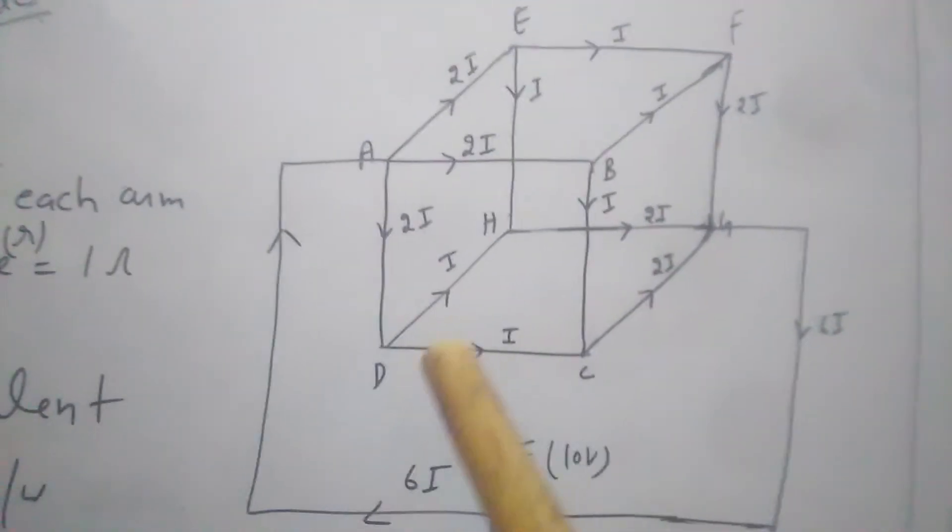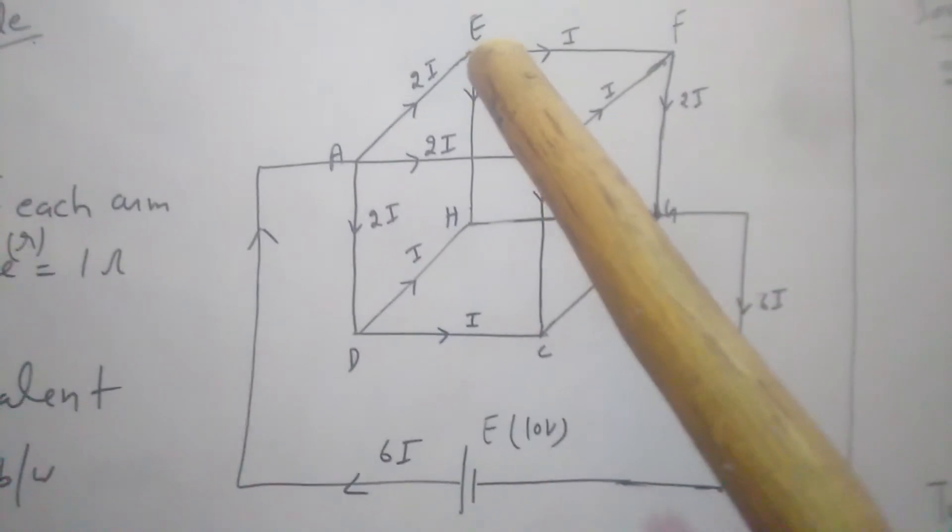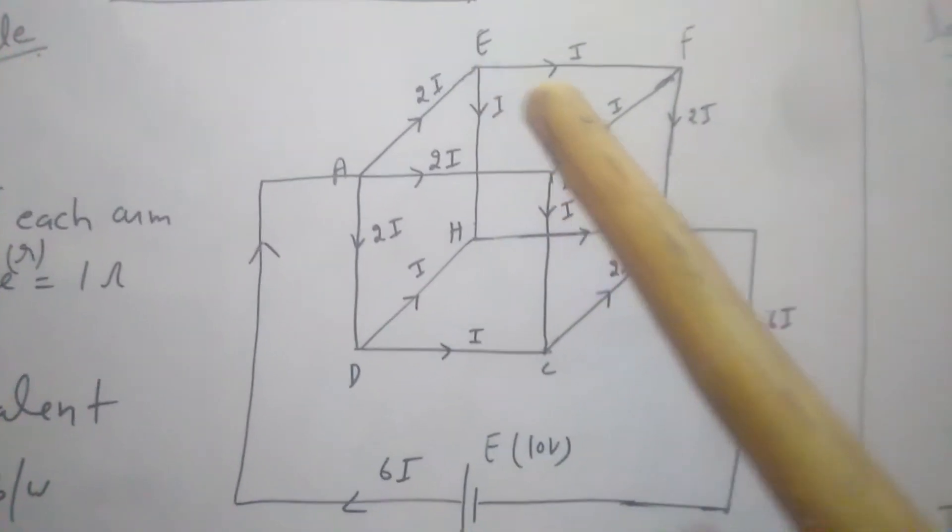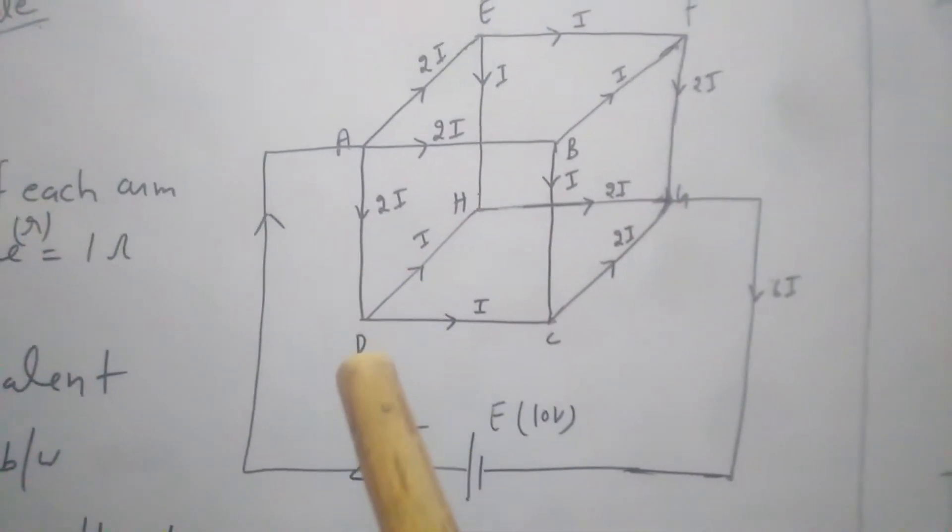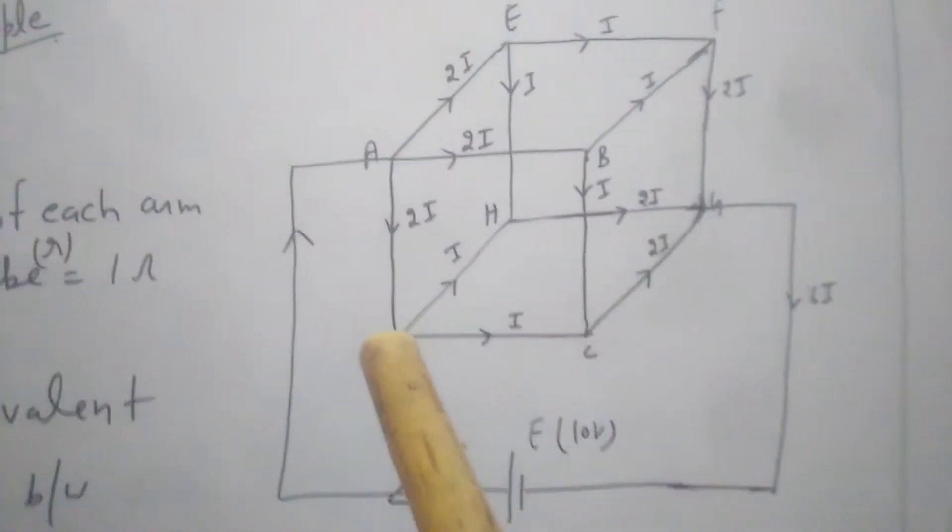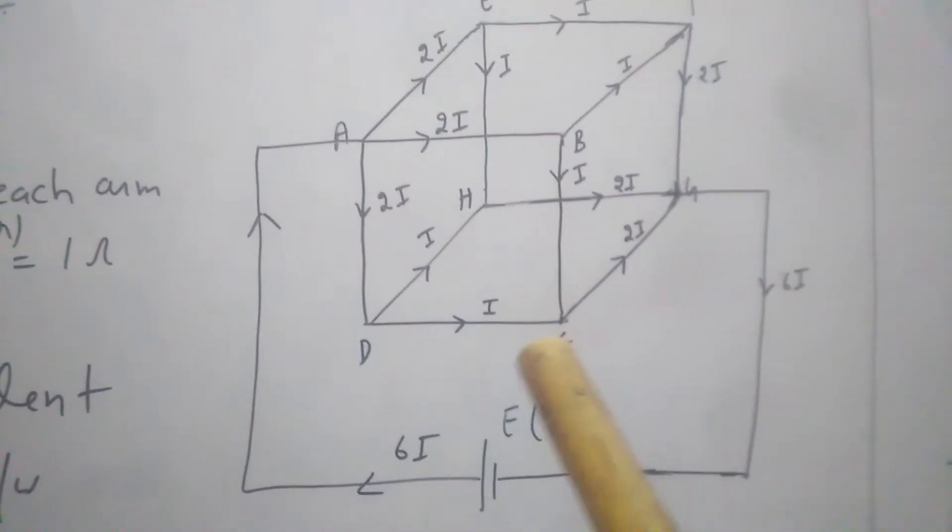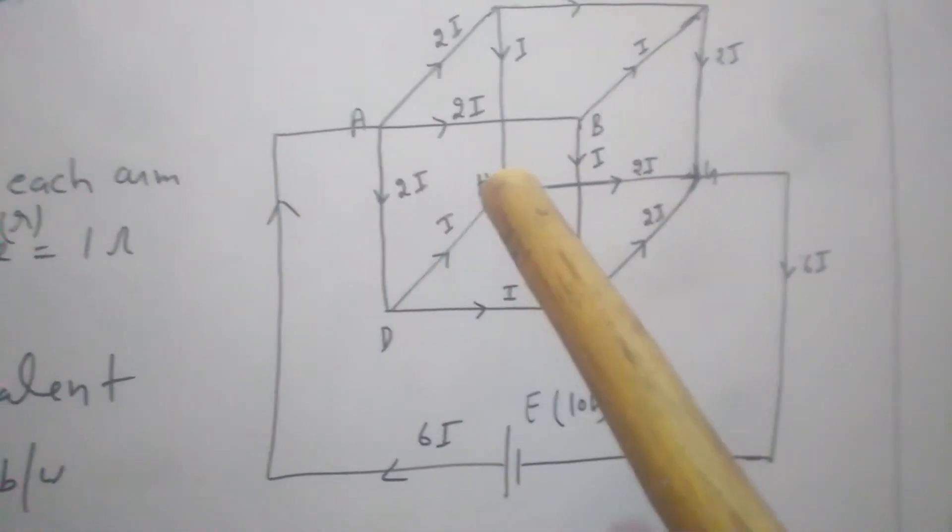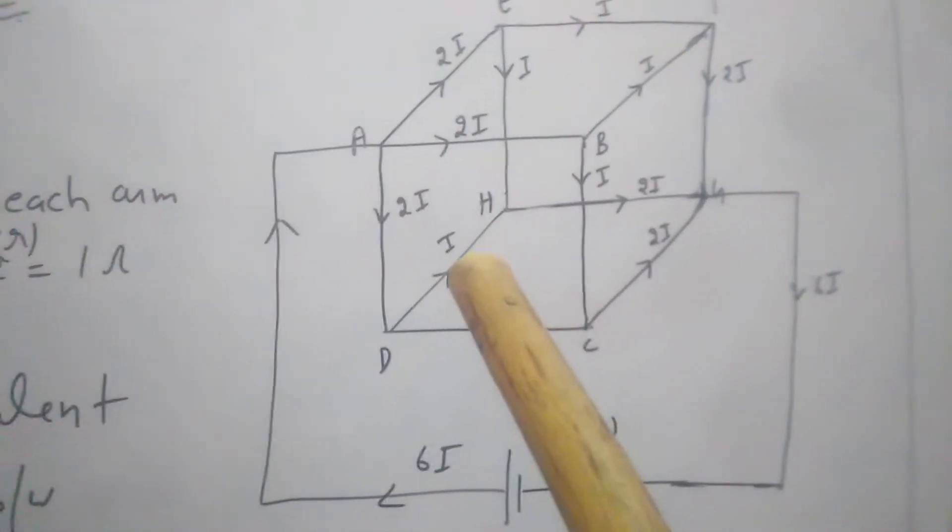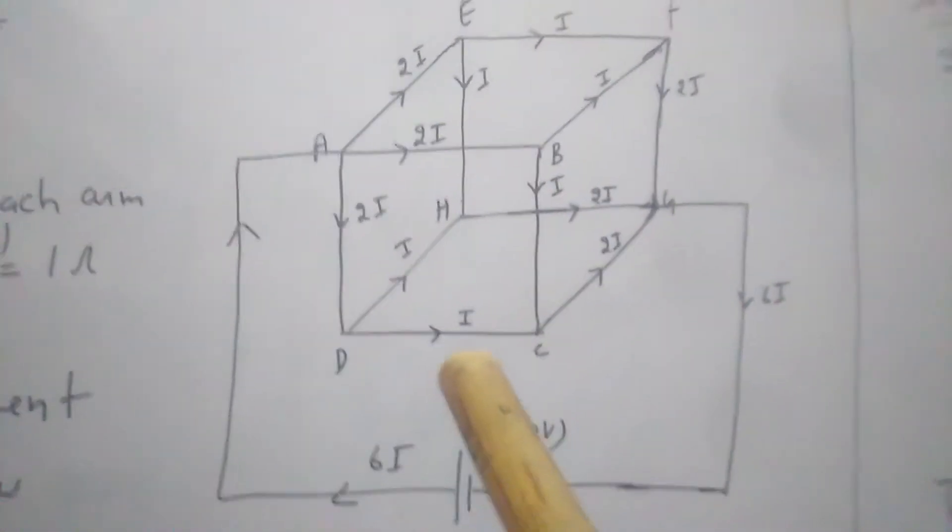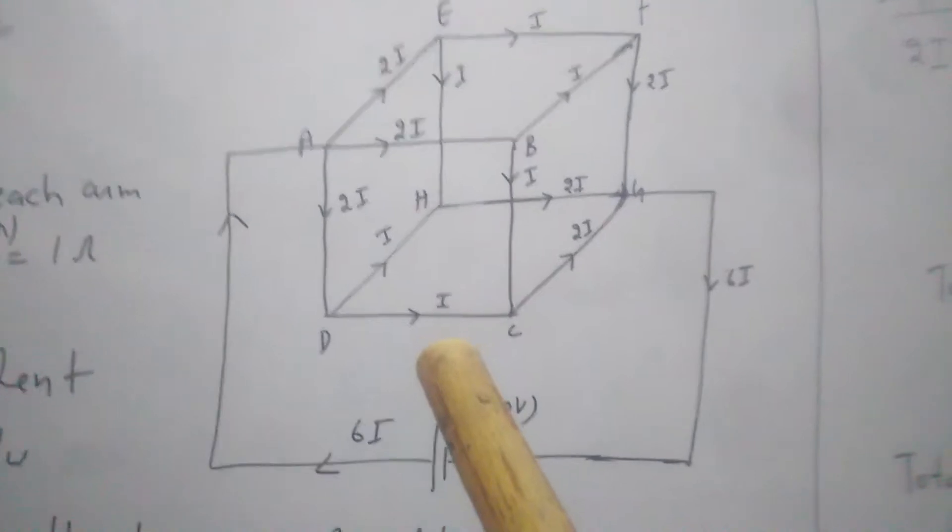Now at point E current is divided into two parts - i along EF and i along EH. Similarly at point D current again divides into two parts - i along DC and i along DH, because resistance of DC and DH are same, so current will also be same.